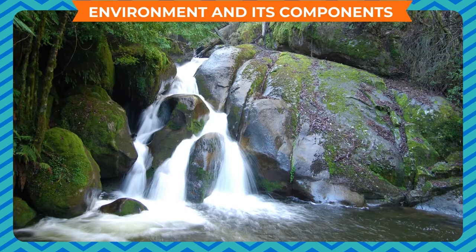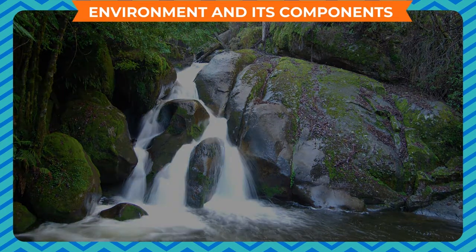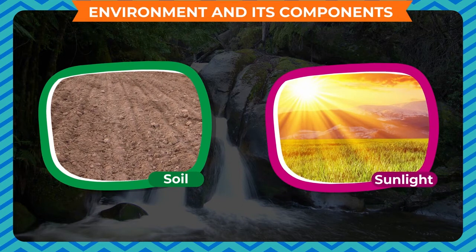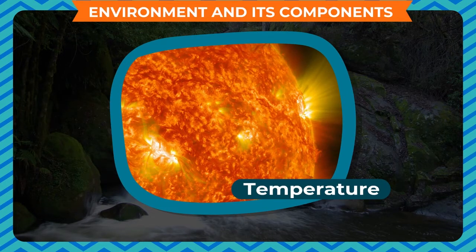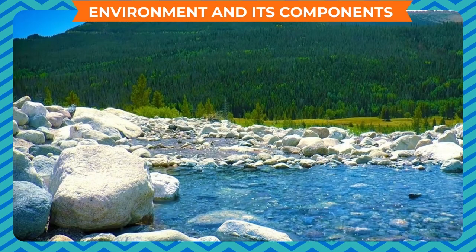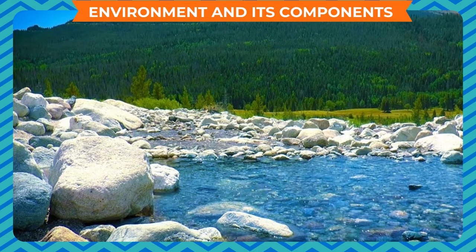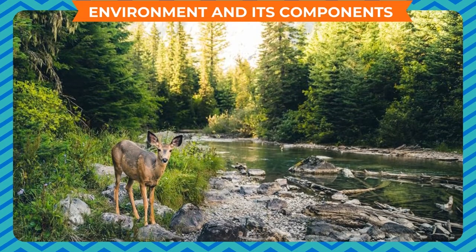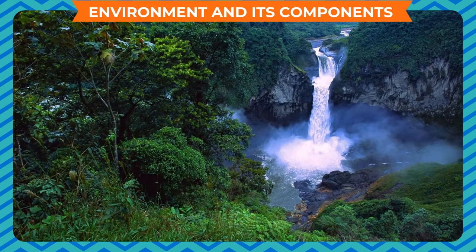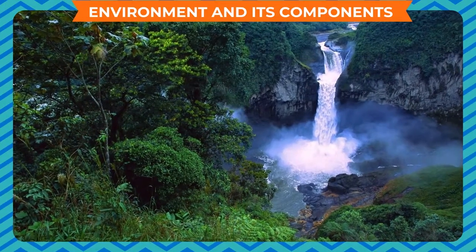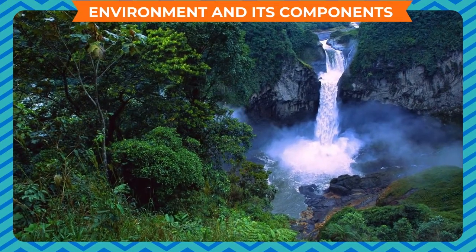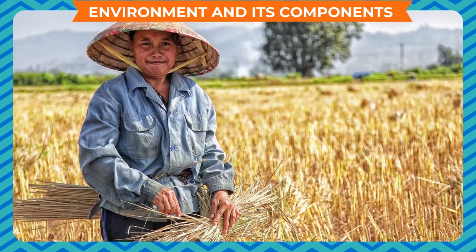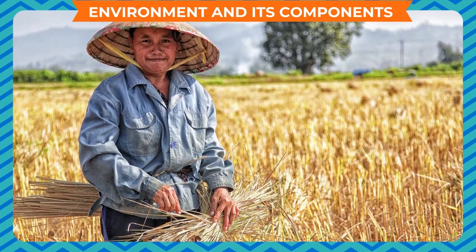The abiotic components include air, water, soil, sunlight, temperature, etc. These constitute the physical environment and affect the animals found in that area. Biotic and abiotic components together constitute the natural environment. Human beings are also a part of the biotic environment.